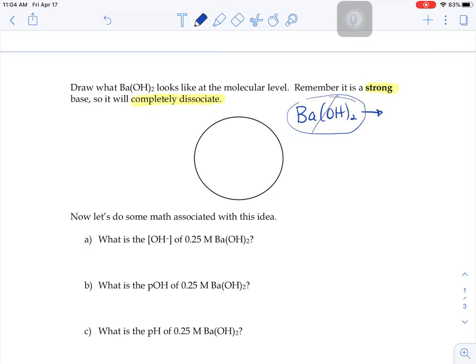It's going to break up completely into ions. So it's going to break up into barium ions, and we have two hydroxides this time. So we're going to write it like net ionic equation style where you bring that two out in the front.